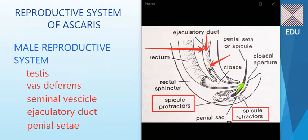With this we finish the male reproductive system of Ascaris. To summarize: we have a single tubular testis, then the vas deferens carrying sperms to the seminal vesicle, which stores the sperms. The seminal vesicle connects via the ejaculatory duct — which has prostate glands — opening at the cloacal aperture. At the aperture we have the penial sac containing two penial setae, with protractor and retractor muscles.